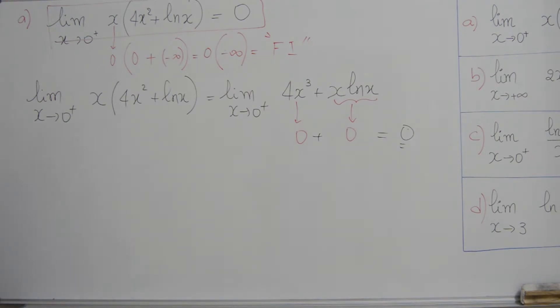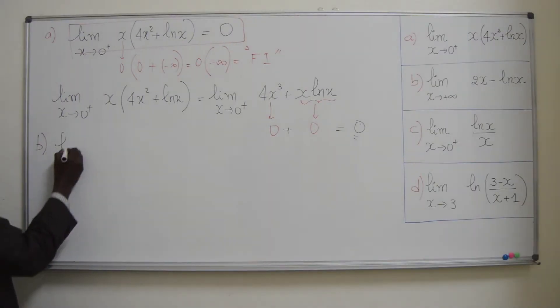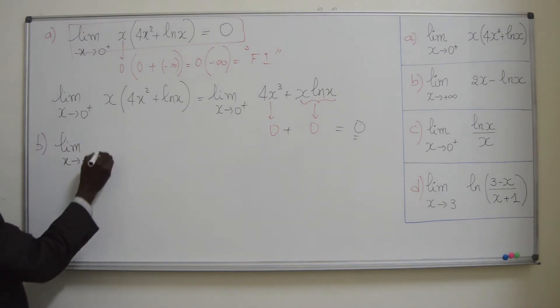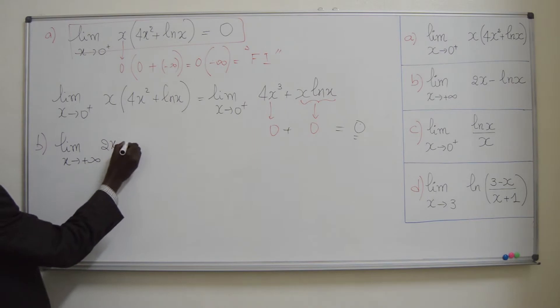Passons à la limite B. Alors, on a limite, lorsque x tend vers plus l'infini de 2x moins ln2x.